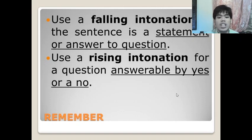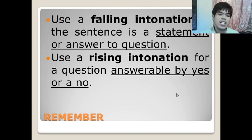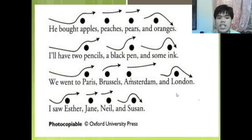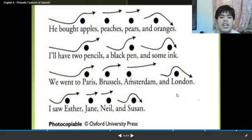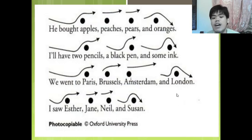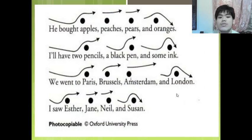Falling intonation is used in sentences that are statements or that answer a question. Rising intonation is used in questions answerable by yes or no. For example: 'He bought apples, peaches, pears, and oranges.' 'I'll have two pencils, a black pen, and some ink.' 'We went to Paris, Brussels, Amsterdam, and London.' 'I saw Esther, Jane, Neal, and Susan.'